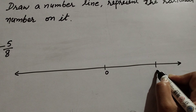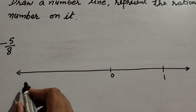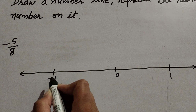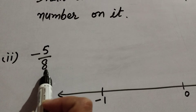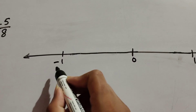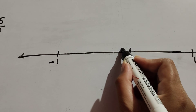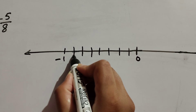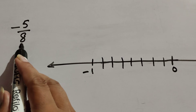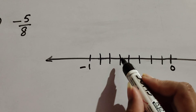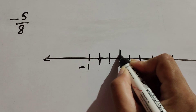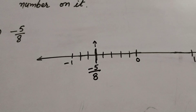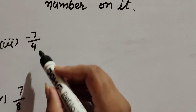We mark zero, one, and so on, and on the left hand side zero, minus one. We have a negative rational number and its denominator is eight, so we divide zero to minus one into eight equal parts: one, two, three, four, five, six, seven, eight. Now we represent minus five over eight — we count five lines and this line represents the rational number minus five over eight.